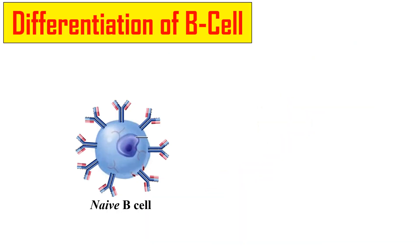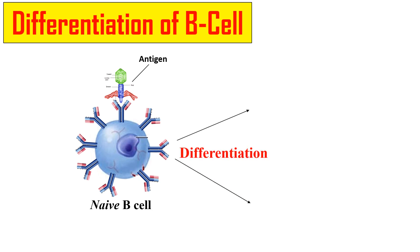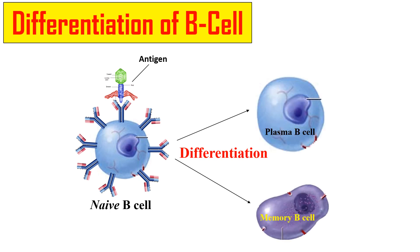Next is the differentiation of B cells. Differentiation means the B cell makes other cell populations. The naïve B cell — one that has not encountered any antigen — upon antigen binding to its receptor, differentiates into two kinds of populations: plasma B cells, which make antibodies to kill the antigen, and memory B cells, which are stored for the next immune response when the same antigen enters the body.